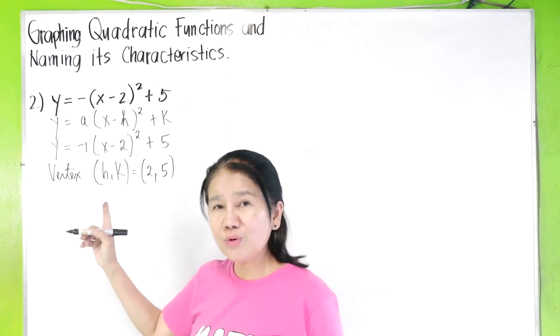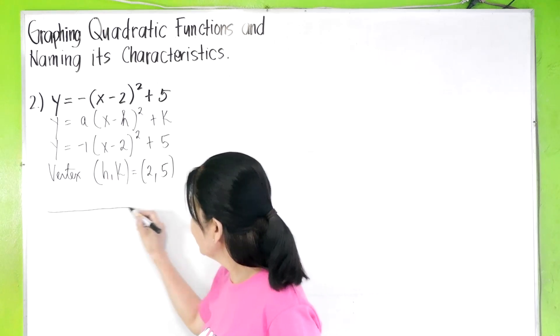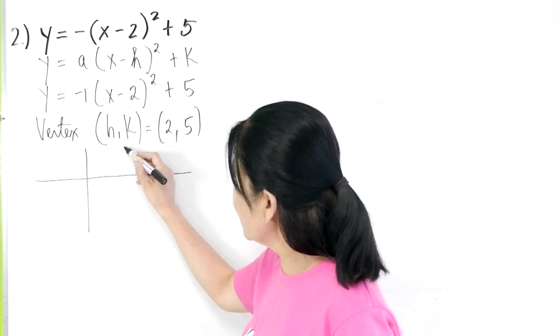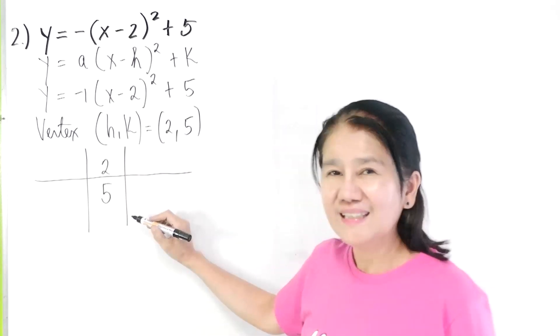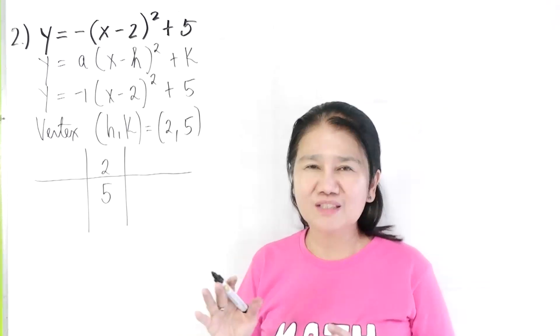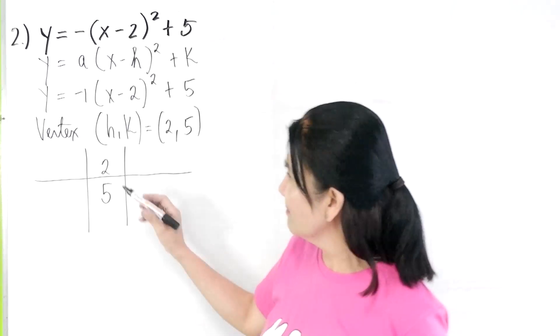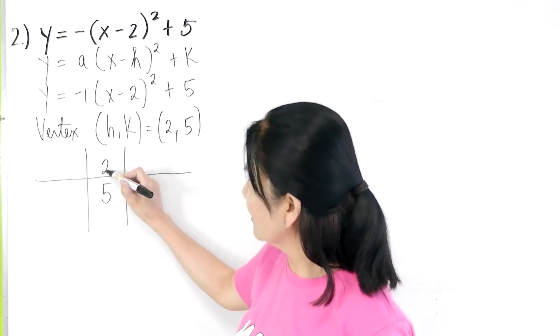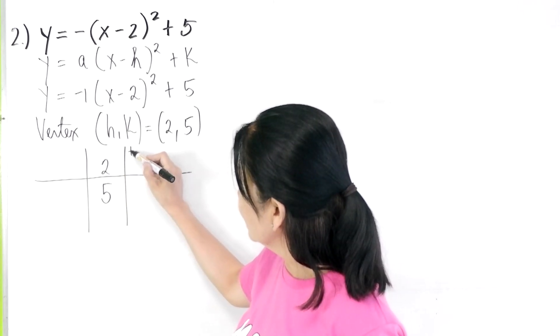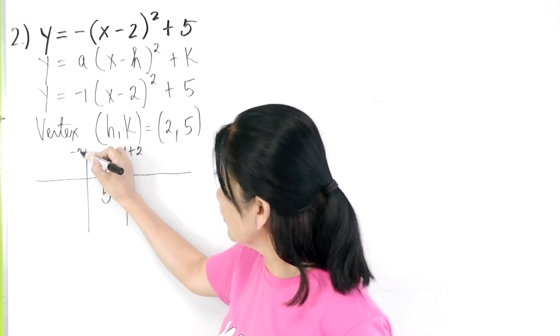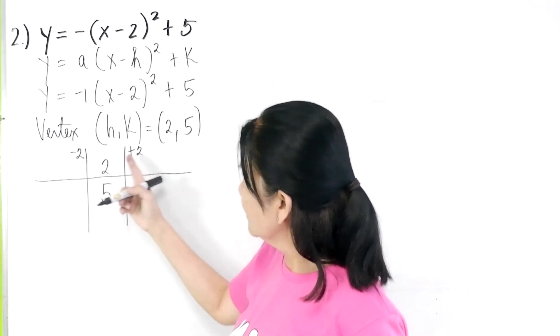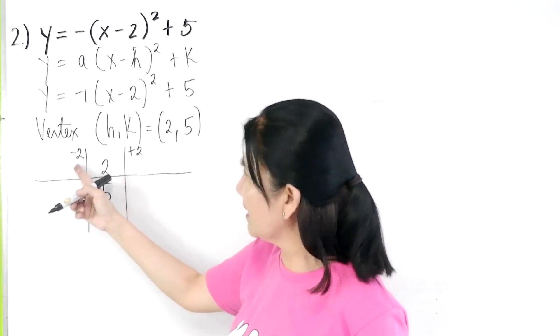So now once we have the vertex, we do it fast. We write the vertex here at the middle, two and five. And then, since the parabola is symmetrical to the right and to the left, we add a value, let's say plus two to two and minus two.